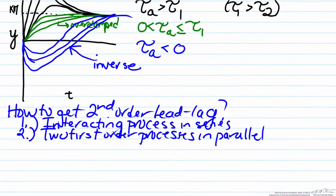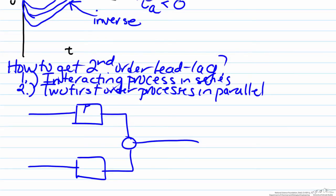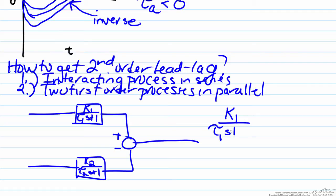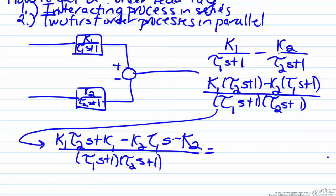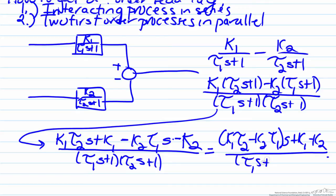To find how we can get a negative tau a, let's look at a hypothetical process with transfer functions k1 over (tau1·s + 1) and k2 over (tau2·s + 1), with signs plus and minus. At the summing point we get k1/(tau1·s + 1) minus k2/(tau2·s + 1). Finding the least common denominator and simplifying, we group the s terms to get: [k1·tau2 − k2·tau1]·s + (k1 − k2), all divided by (tau1·s + 1)(tau2·s + 1).